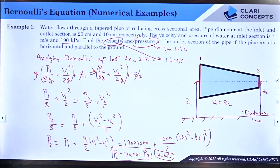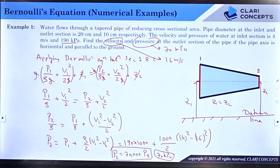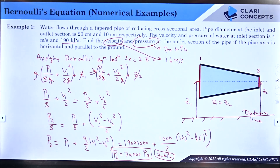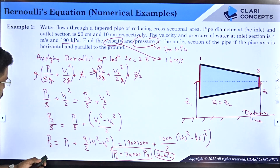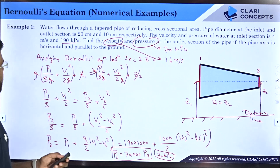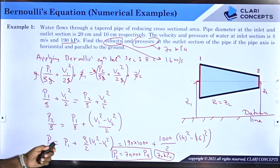Let me verify the answer — yes, the answer is correct. The final pressure at the outlet is 70 kPa and the velocity at the outlet is 16 meters per second. I hope you understood this example; let us move on to the next case.